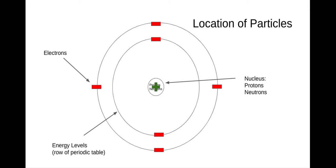If you think of a magnet, the positive side of a magnet and a negative magnet will be attracted to each other — just like the nucleus is positive and the electrons are negative. So that atom is held together kind of like a magnet.